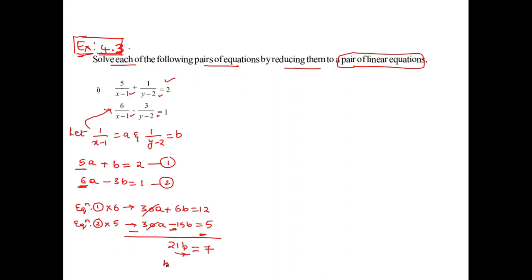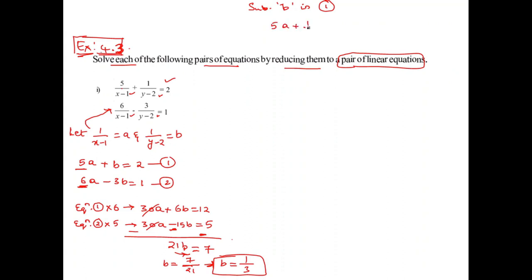Substituting B equals 1 by 3 into equation number 1: 5A plus 1 by 3 equals 2. Multiplying through, 10A plus 1 equals 6, so 10A equals 5. Therefore A equals 5 by 10, which simplifies to 1 by 2. So A equals 1 by 2.